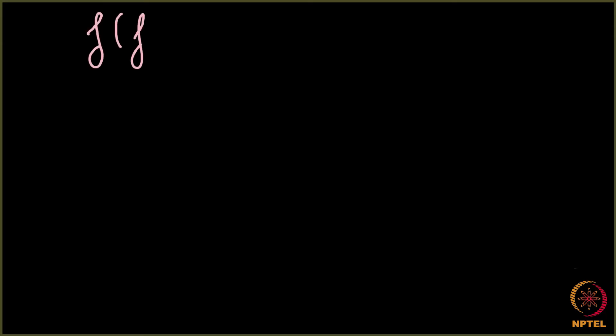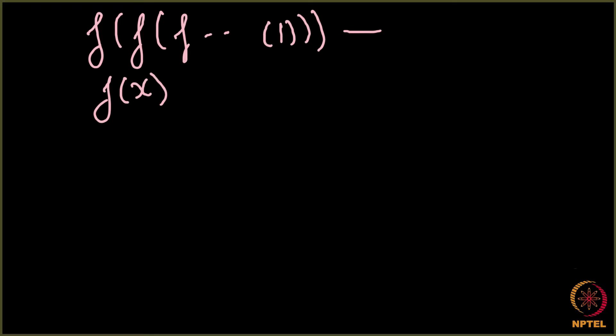Now, coming to the final part of this theorem proving. What we were doing — our aim was to find f(f(f(...(1)...))) applied infinite times, where f(x) was a function which was 1 minus (1 minus px) to the power of k.